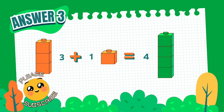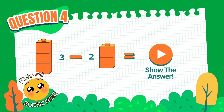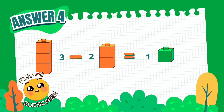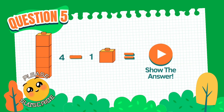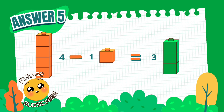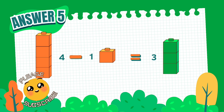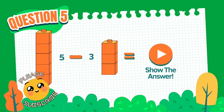3 blocks plus 2 blocks equals 5. 3 blocks plus 1 block equals 4. Now subtraction: 3 blocks minus 2 blocks equals 1 block. 4 blocks minus 1 block — what do you get? The answer is 3 blocks. 4 minus 1 equals 3. Now: 5 blocks minus 3 blocks —